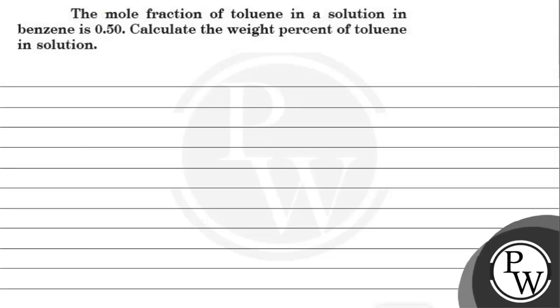Hello kids. So let's read this question. The mole fraction of toluene in a solution of benzene is 0.50. Calculate the weight percent of toluene in the solution.